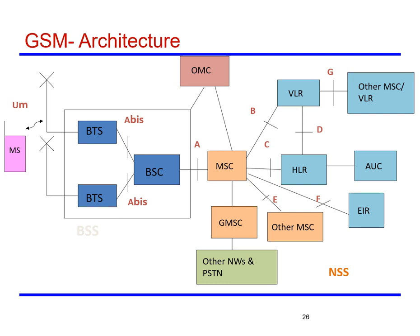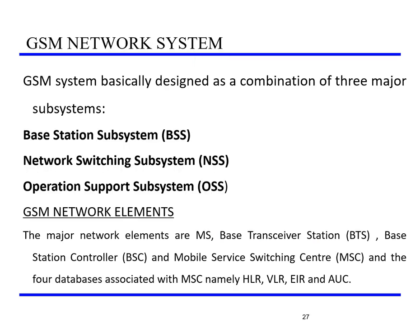The GSM system is designed as a combination of three major subsystems: the Mobile Station, the Base Station Subsystem (BSS), the Network Switching Subsystem (NSS), and the Operation Support Subsystem (OSS). The major network elements are the mobile station, BTS, BSC, MSC, and four associated databases: HLR, VLR, Equipment Identity Register, and Authentication Center.